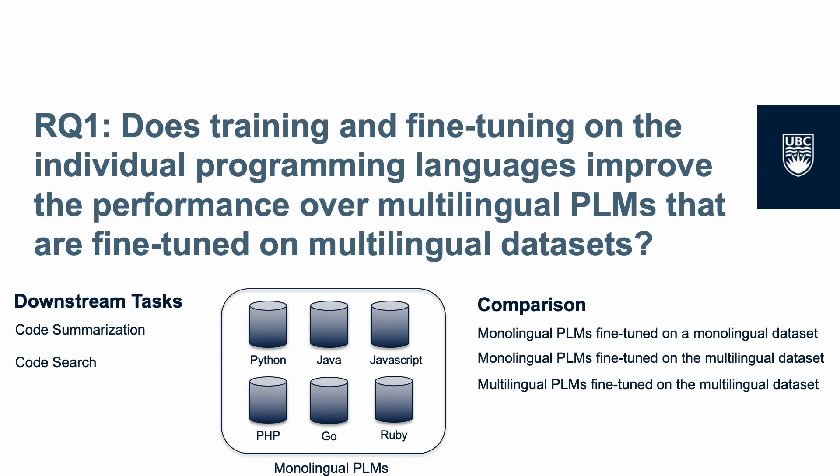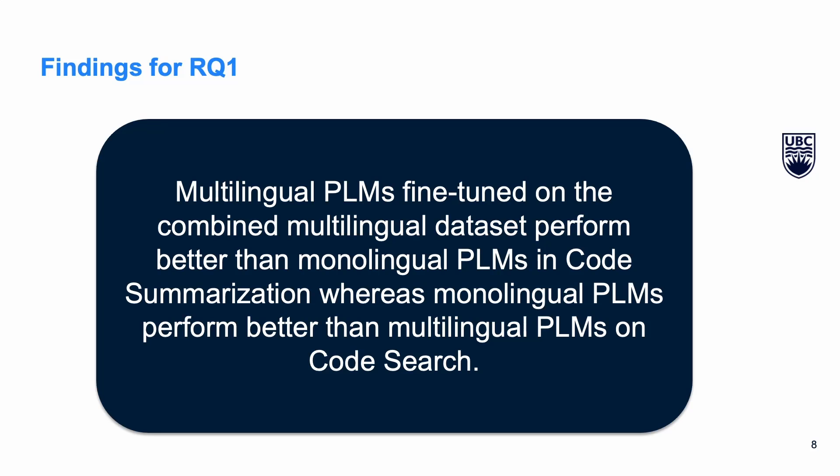In RQ1, we are interested to know if additional programming languages add merits to pre-training a PLM for different tasks. We train multiple PLMs for fine-tuning on two widely used downstream tasks: code summarization and code search. We observe that for code summarization, multilingual PLMs fine-tuned on the combined multilingual dataset perform better than monolingual PLMs, whereas for code search, monolingual PLMs perform better than multilingual PLMs.